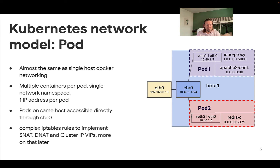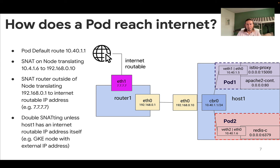It starts getting more complex with IP table rules because new concepts like Kubernetes services need to be implemented through those rules, which we'll cover later. Let's look at how a pod reaches the internet. Pod 1 by default has a route to 10.14.1.1, which is the Linux bridge on host 1. When that packet goes to this bridge it enters IP tables, and there will be a rule to masquerade traffic coming from that IP CIDR, translating the 10.14.1.5 address to the source IP of the host.